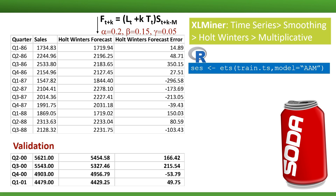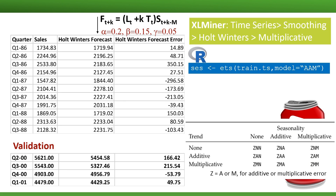Before looking at some charts and performance metrics, I'll note that in R, you can specify the different combinations of additive and multiplicative seasonality by modifying the three-letter combination. In the ETS function, A means additive, M means multiplicative, and N means none. The first letter refers to the type of error, which can also be additive or multiplicative. The second refers to the trend, and the third to seasonality.